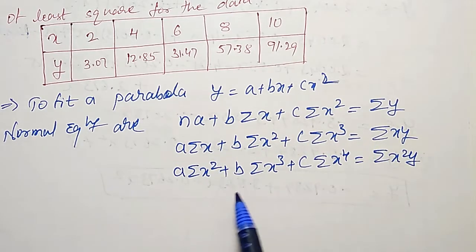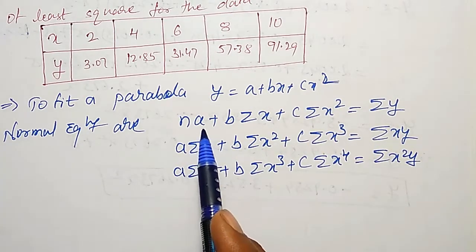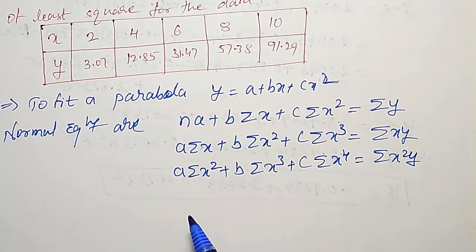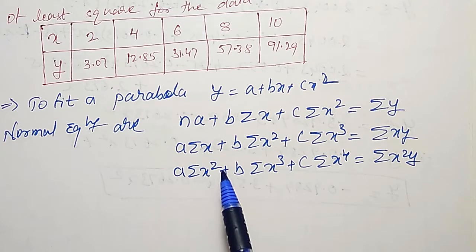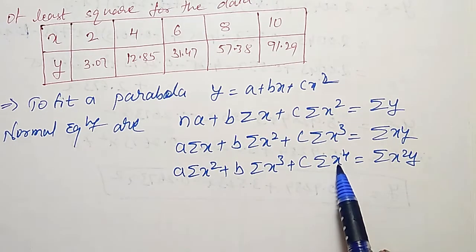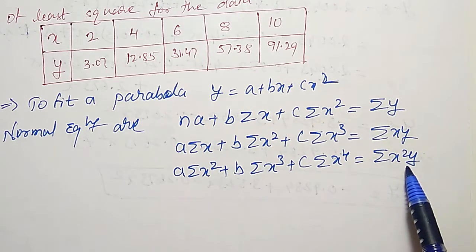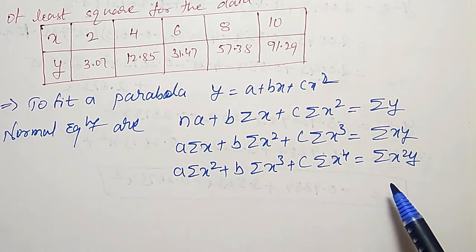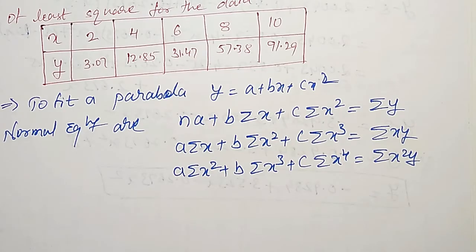Using these normal equations, I have to find the values of a, b and c parameters. To do that, I have to prepare the table to find the values of summation of x, x square, x cube, x raise to 4, summation of y, xy and x square y. I will prepare the table and come back.